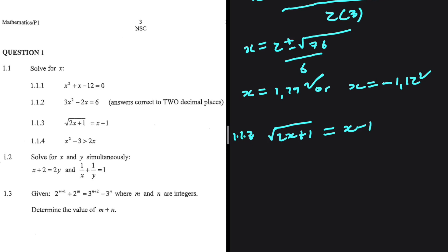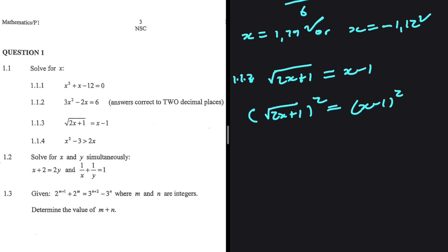This question is a very basic question — it is always there in the final exam. We're going to square both sides. We're going to have the square root of 2x plus 1, squared, equals x minus 1 squared. So on the left-hand side, we're going to have 2x plus 1, as the square root cancels out, equals x minus 1 squared.